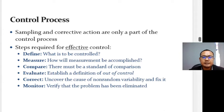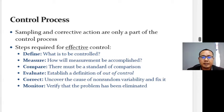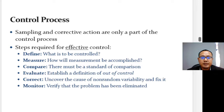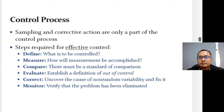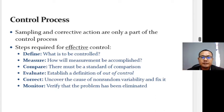Sampling and corrective action are only part of the control process. Effective control requires these steps. First, define — in sufficient detail what is to be controlled. For example, a painted surface can have many important characteristics such as thickness, hardness, and resistance to fading or chipping. Different characteristics may require different approaches for control purposes.